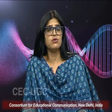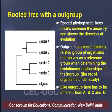In a rooted tree, we take it back to an origin — we have a root, and it depicts the direction of evolution. We have four species represented, and for defining the root, one very important concept is the outgroup.